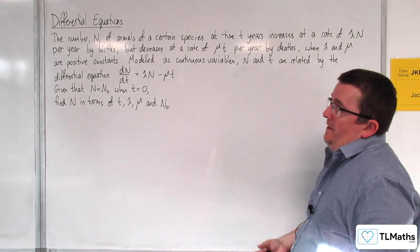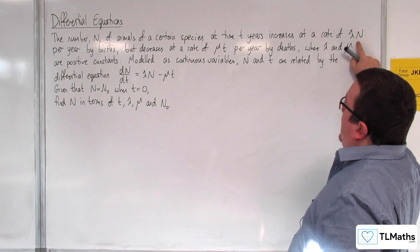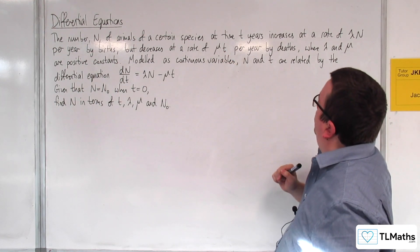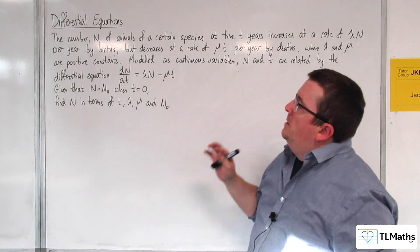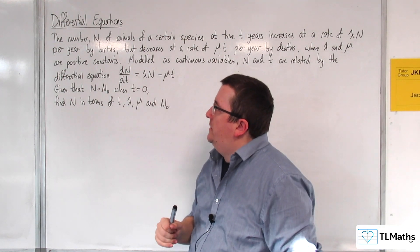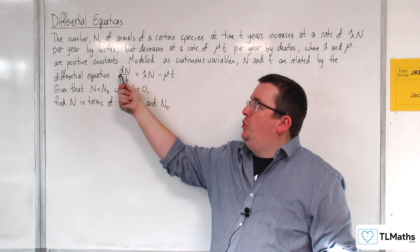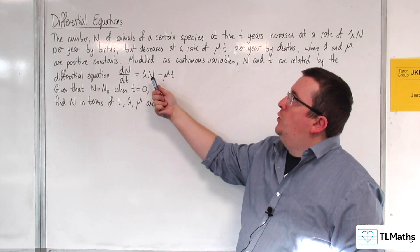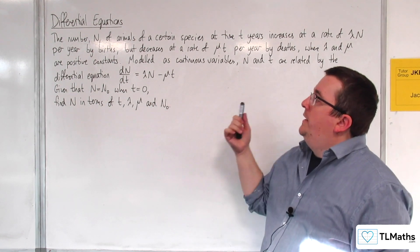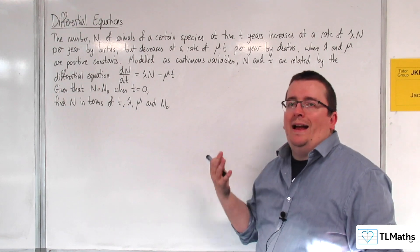In this question, the number n of animals for a certain species at time t increases at a rate of λn per year by births, but decreases at a rate of μt per year by deaths, where λ and μ are positive constants. Modelled as continuous variables, n and t are related by the differential equation dn/dt = λn − μt. Given that n = n₀ when t = 0, find n in terms of t, λ, μ, and n₀.